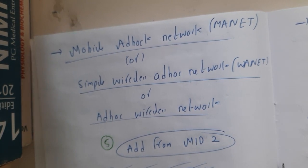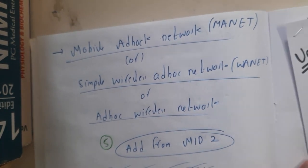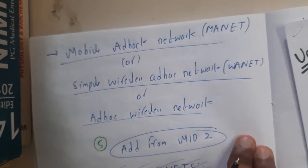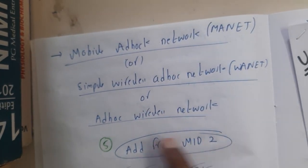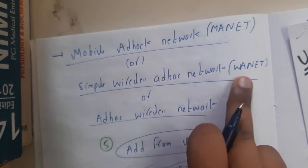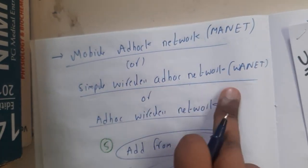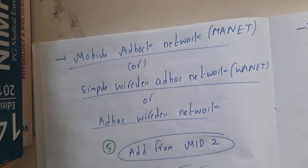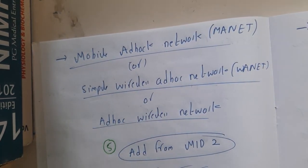I hope everyone got some basic idea about DHCP - Dynamic Host Configuration Protocol. In the next lecture, we'll be discussing about ad hoc wireless networks, sometimes called VANETs - simple wireless ad hoc networks - or MANETs - Mobile Ad hoc Networks. Let us meet in the next lecture. Thank you, thanks for watching.